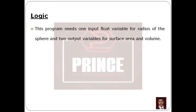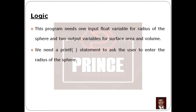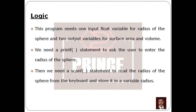This program needs one input float variable for the radius of the sphere, and two output variables for surface area and volume. The input is the radius of the sphere — a float variable. Then the outputs are surface area and volume. We need a printf statement to ask the user to enter the radius of the sphere, and a scanf statement to read the radius from the keyboard and store it in a variable.